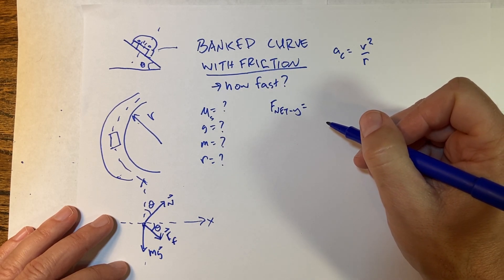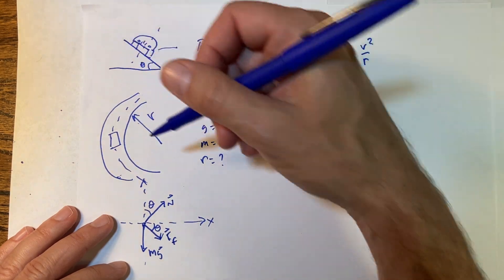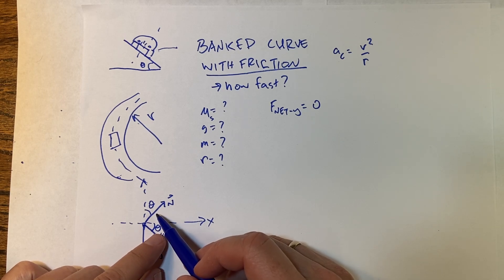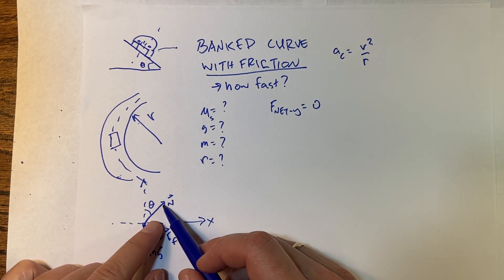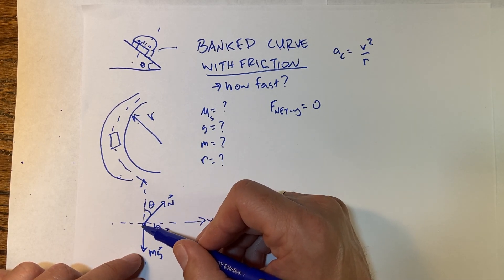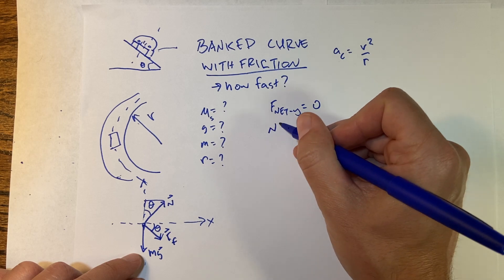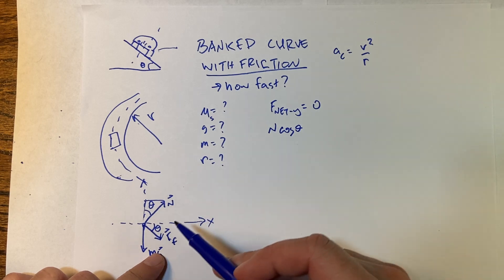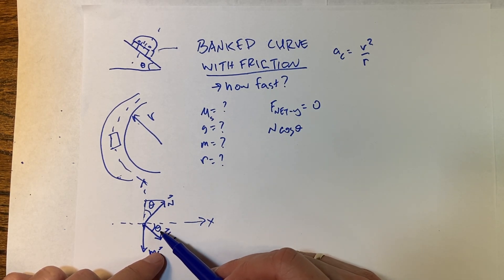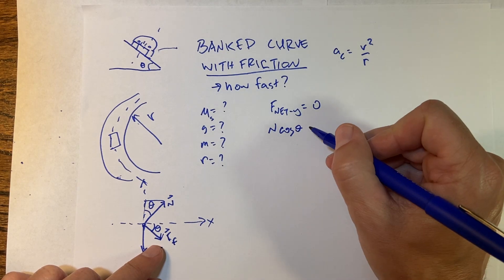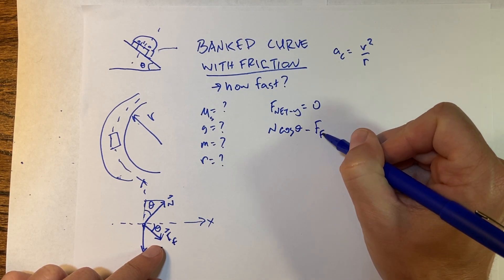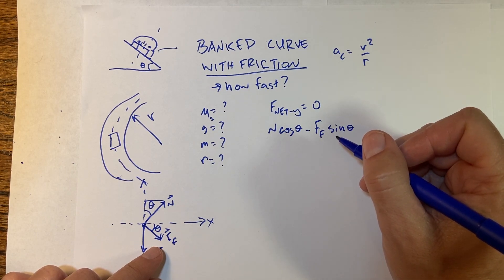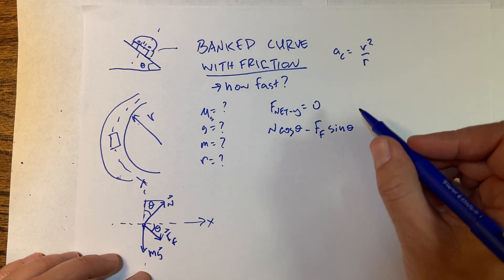Let's do F-net in the y-direction. The acceleration in y is zero because the car doesn't move up or down. I'll skip some details we covered in the last video. The y-component of the normal force is the adjacent side of the triangle, so it's N cosine theta. I also have a vertical component of friction — friction is in the y-direction a little bit — so that's minus f-friction sine theta. And then I have the gravitational force. Things are going to get a bit involved, but stay calm — this is a hard problem.